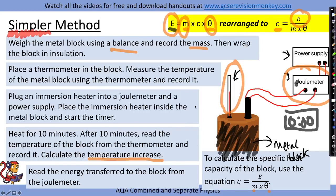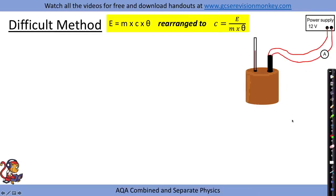Now I'll move on to a more difficult method that doesn't use a joule meter, but uses a couple of equations to work out the energy transferred to the block. If you're comfortable with the simpler method, you can skip to the next required practical. This method still follows the same equation E equals mc theta, which we rearrange to calculate specific heat capacity, and many of the initial steps are the same as the simpler method.